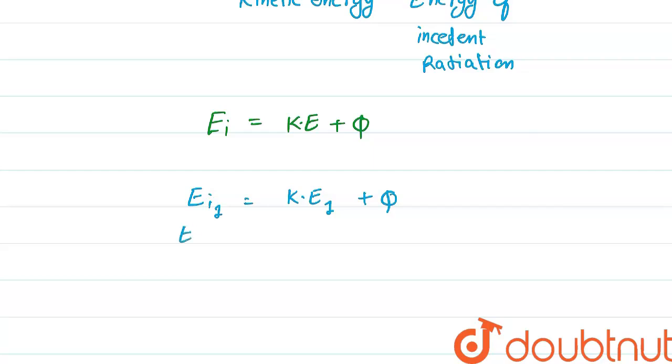And in the second case, when the incident energy is increased, the kinetic energy becomes K2 plus work function. Work function is always same. Suppose this is equation 1, and this is equation 2.